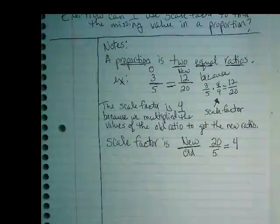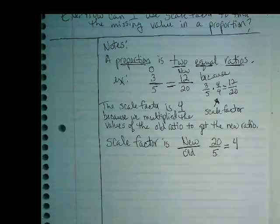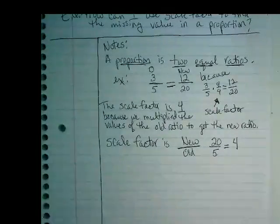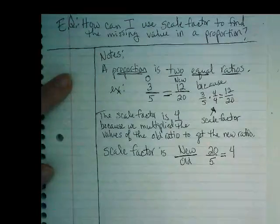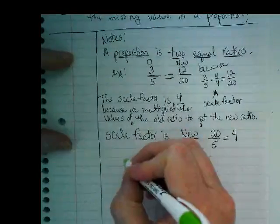We've worked on cross-multiplying to find missing numbers, but you can also use scale factor to find it. And that was actually our essential question if you look back. Our essential question said, how can I use scale factor to find the missing value in a proportion? Well, let's try something that's not as obvious when we look at it.